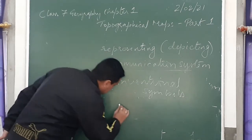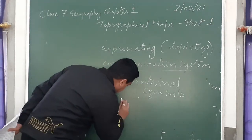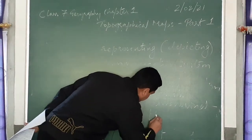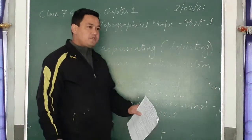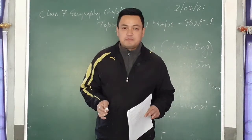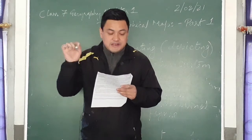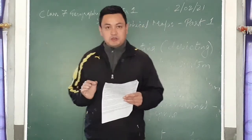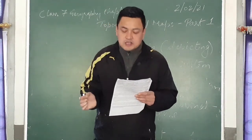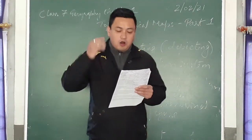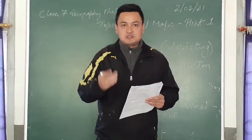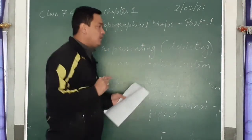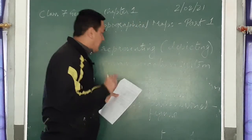In previous classes we have studied what is a two-dimensional figure and what is a three-dimensional figure. The two-dimensional figure is known as a map. A map is a drawing of the earth's surface — either the whole or part of it — on a flat surface. A small part of an area shown on a flat surface is known as a map.